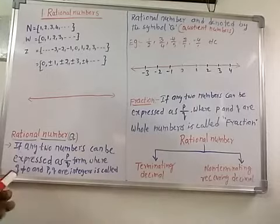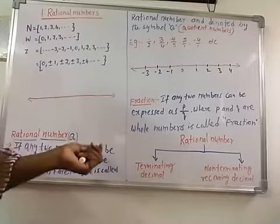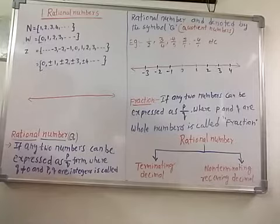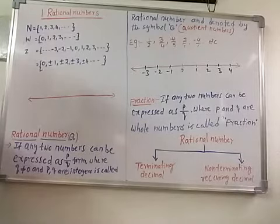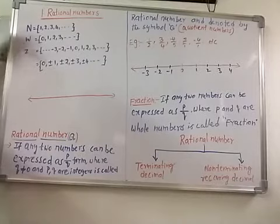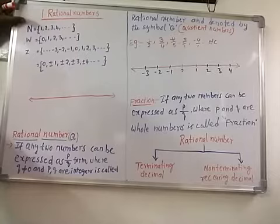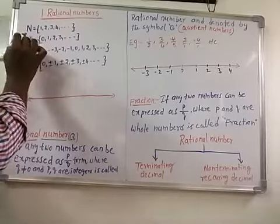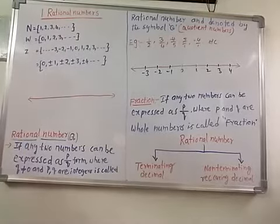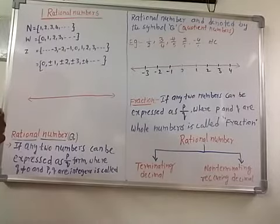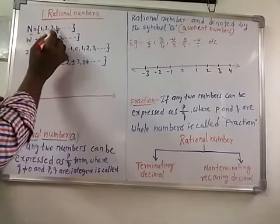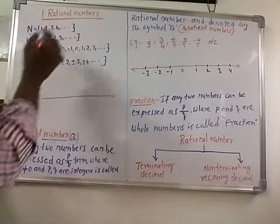We know natural numbers, whole numbers, and integers. So what is a natural number? Counting numbers — that is, 1, 2, 3, 4, and so on — are called natural numbers. Natural numbers are denoted by the capital English letter N, and can be written as N = {1, 2, 3, 4, ...}.